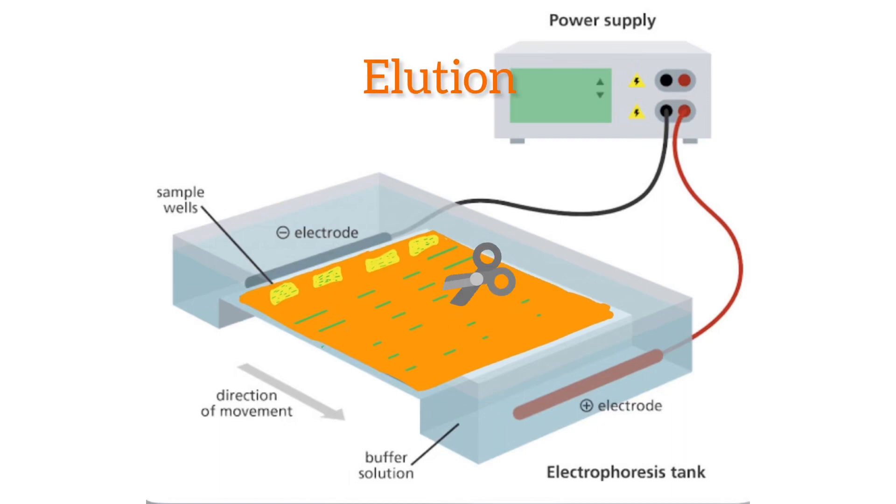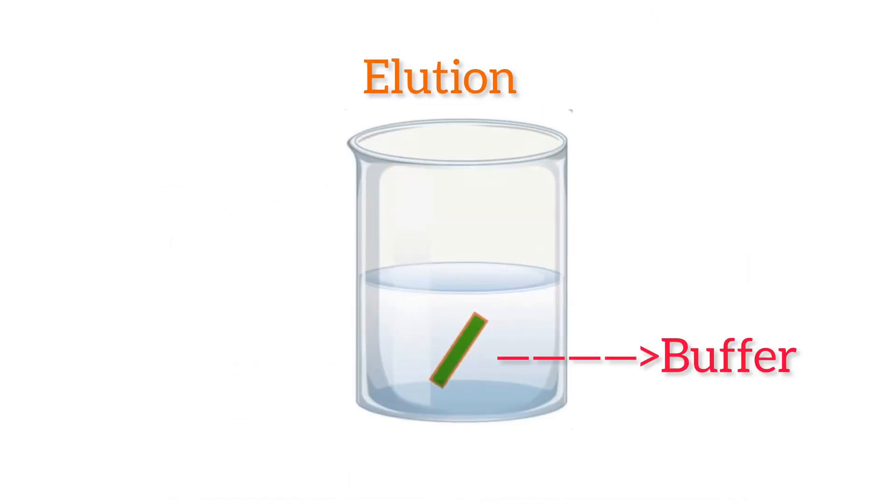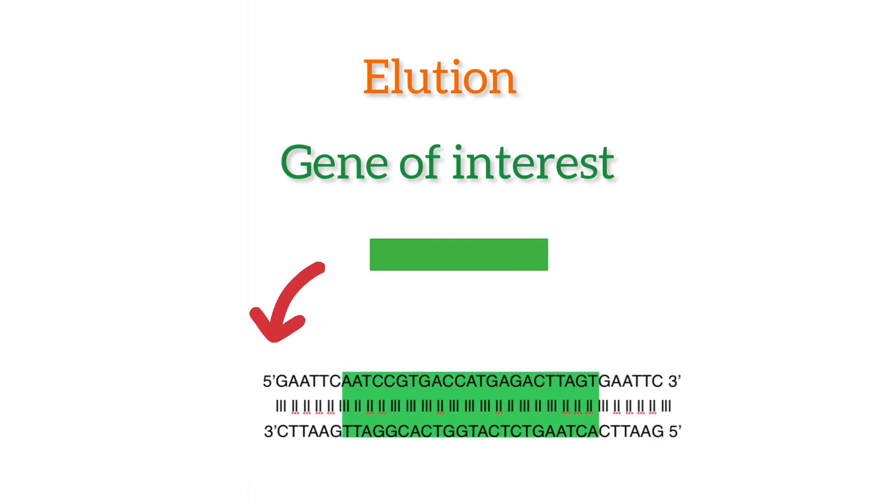The separated bands of DNA are cut out from the agarose gel and extracted from the gel piece. This step is called elution.